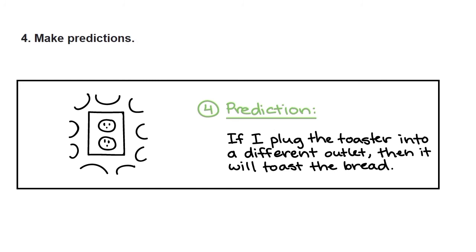Prediction is: if I plug the toaster into a different outlet, then it will toast the bread, which means maybe the plug is not working.